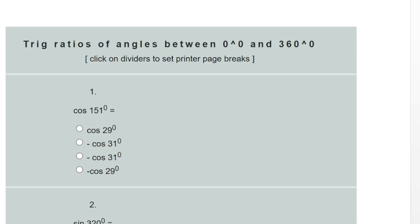The first question asks: cos 151 degrees equals what? The first thing you need to do is determine which quadrant 151 degrees falls in. That is the second quadrant, because it is less than 180 but greater than 90 degrees.